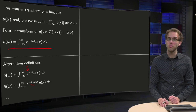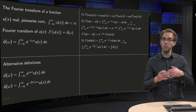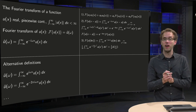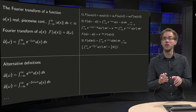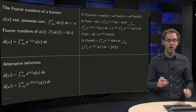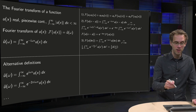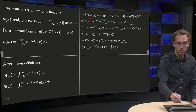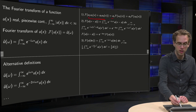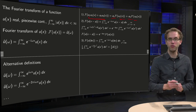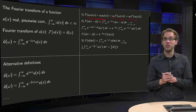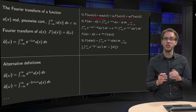Now, we have some properties — properties we can use to compute Fourier transforms of some functions in order to compute Fourier transforms of other functions. For example, we have linearity. The Fourier transform of a linear combination of u1 and u2 is the linear combination of the Fourier transforms of u1 and u2. That is because integrals are linear operations.